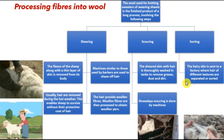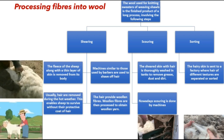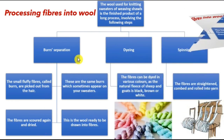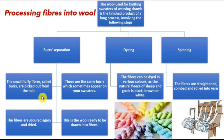Then we have sorting — separating different types of wool for different purposes. The hairy skin is sent to a factory where hair of different textures are separated. The next process is burr separation. Burrs are the small fluffy fibers picked out from the hair — the same burrs which sometimes appear on your old sweaters. After burr separation, the fibers are washed again and dried.